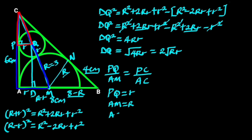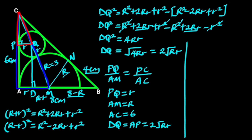AC equals 6 centimeters. Let's note that DQ equals AP, which equals 2√(Rr). Since AC is 6 centimeters and AP is 2√(Rr), then PC equals 6 minus 2√(Rr).